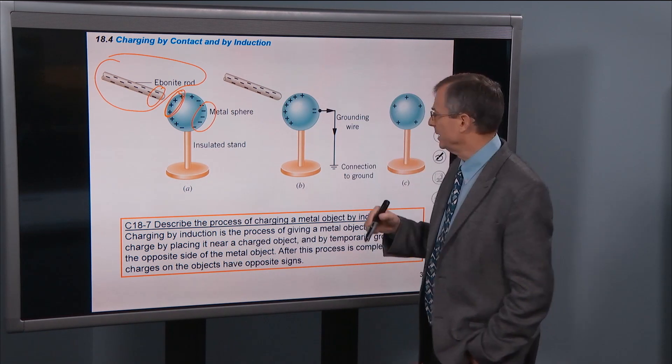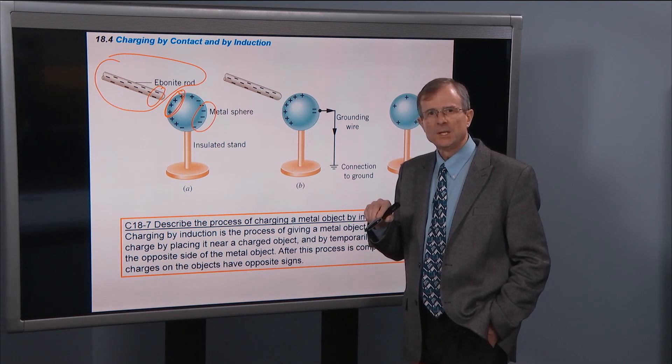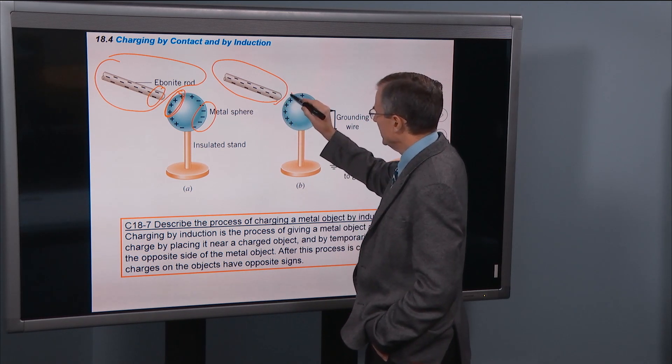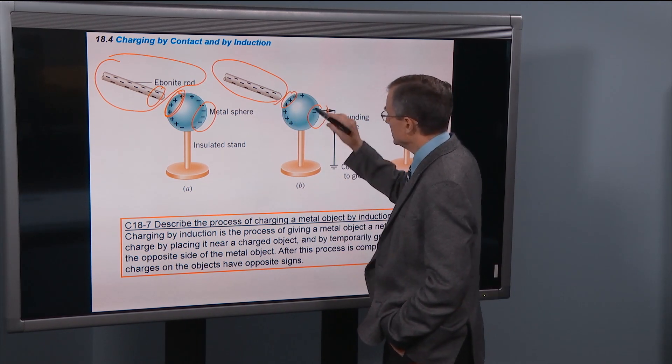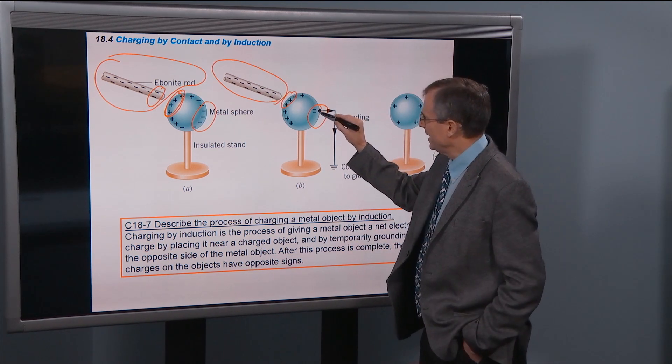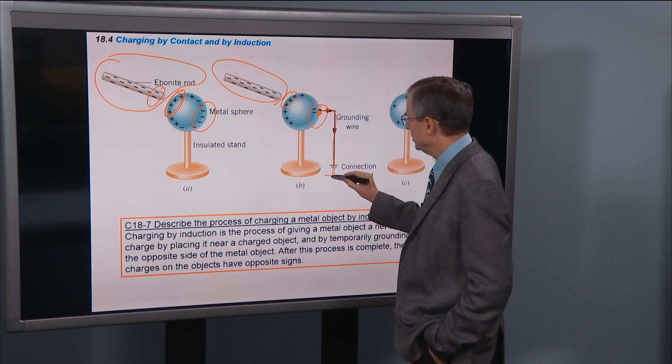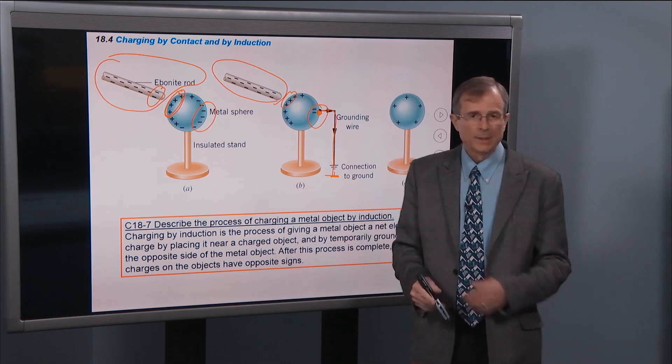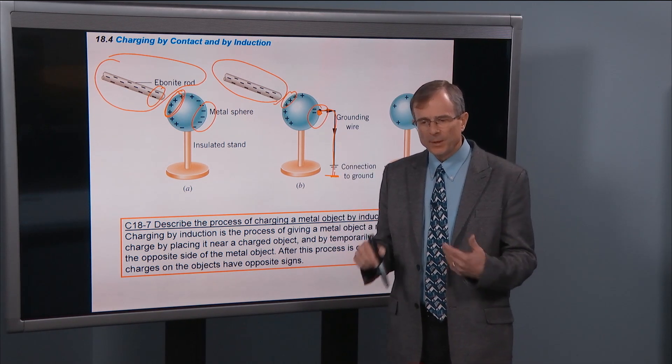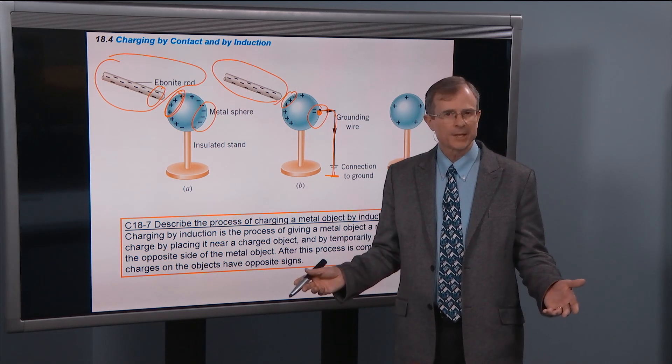The next step in charging by induction is to ground the side of the sphere that's opposite to the nearby charged object. So here's the side that's closest to the charged object, here's the side that's opposite to it, we're going to ground that side. And what it means to ground is just simply to connect this, to attach a wire, to solder a wire to it and run a wire to the ground, dig it into the ground. The ground wire in your house is just an electrical wire that runs deep into the ground.